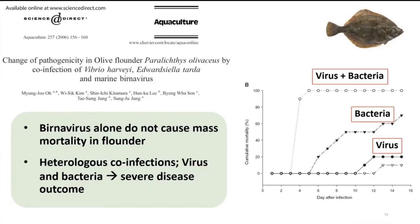In a laboratory study with flounders, challenging with virus alone caused about 20% mortality. But with heterologous co-infections — challenging with the virus together with bacteria — fish died very rapidly within three to four days and 100% died. Bacteria alone, such as Vibrio or Bacillus, still caused high but not 100% mortality. So in a co-infection scenario, you can lose almost all of the stock.